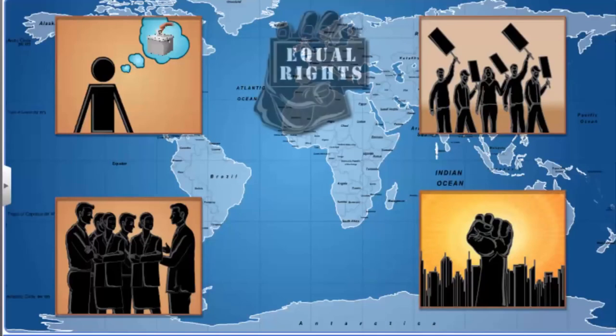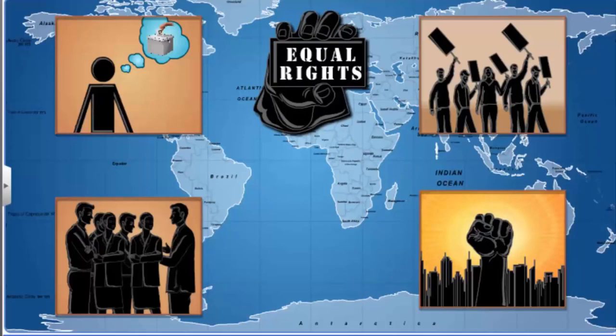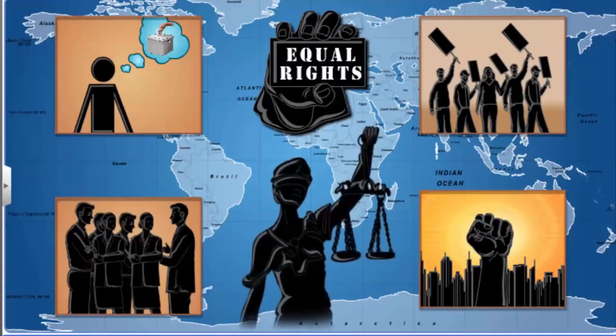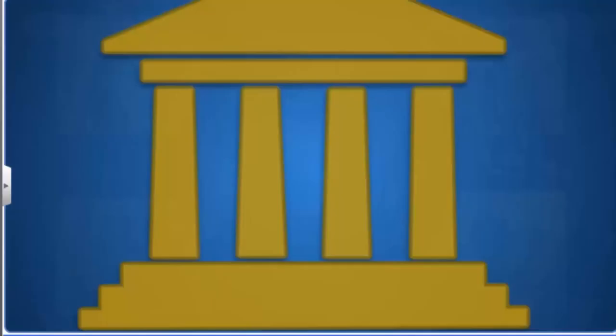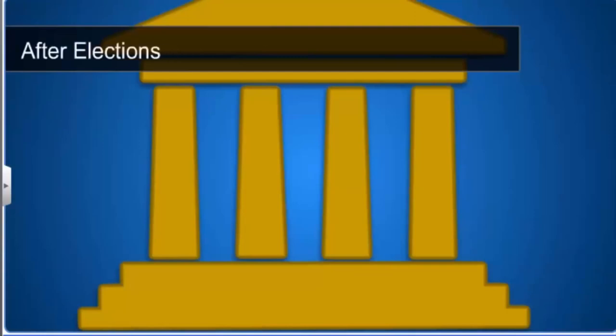Additionally, all rights should apply to everyone equally. Finally, there should be an independent judiciary to protect the rights of the citizens without any political pressure. Now let's consider the conditions that apply to the way a government is run after an election.